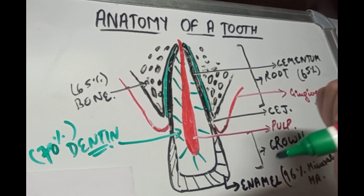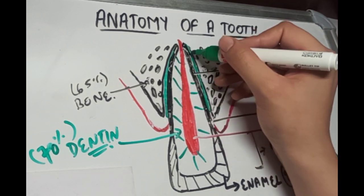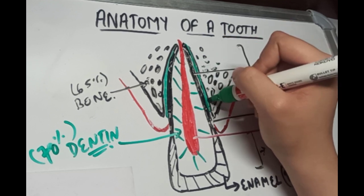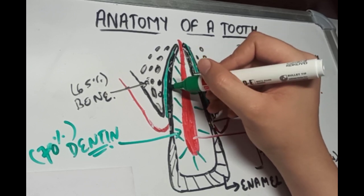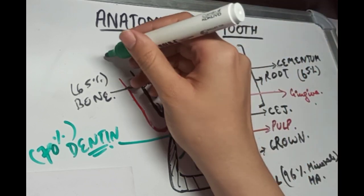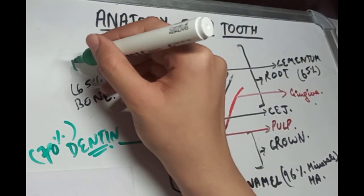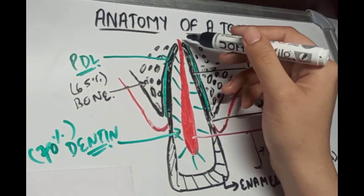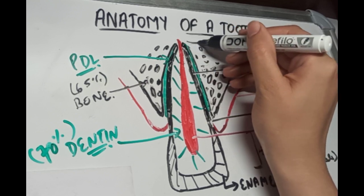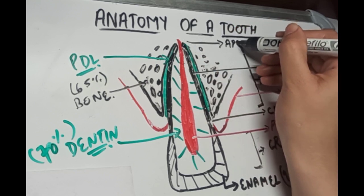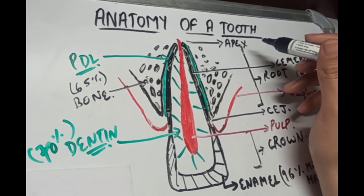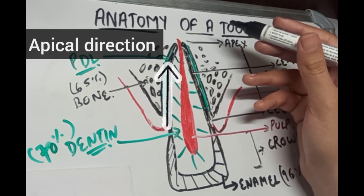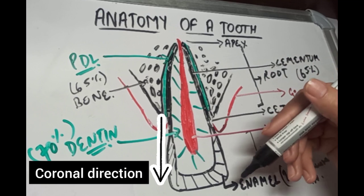Another structure is the tissue that connects the root to the bone. This tissue is called the periodontal ligament, or PDL. And lastly, the tip of the root is called the apex. Anything towards the apex of the tooth is called the apical direction, and towards the crown is called the coronal direction.